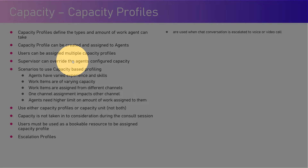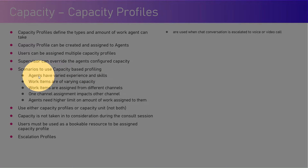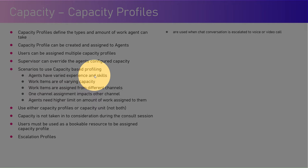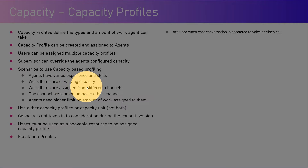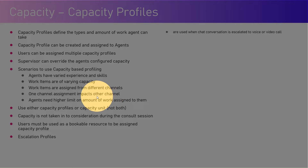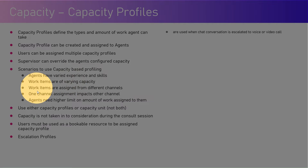The scenarios to use capacity-based profiling are: when agents have varied experience and skills, work items are of varying capacity, work items are assigned from different channels, one channel assignment impacts other channels, and agents need a higher limit on the amount of work assigned to them. If this is the scenario, then it is a wise candidate to use capacity-based profiling.